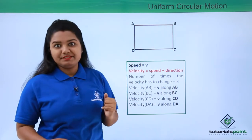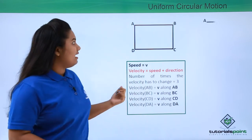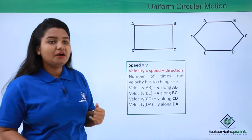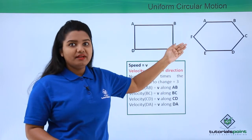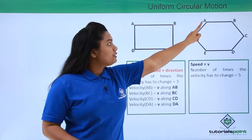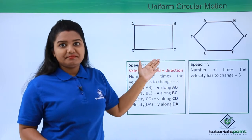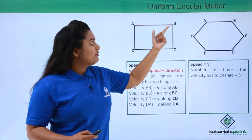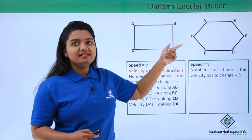Now let's say we increase the number of sides. We have a hexagonal path with six sides. Even here there is a change in velocity at certain points because of the change in direction of motion. At point B there has been a change in velocity since the body has taken a turn, and the same happens at points C, D, E, and F. So the number of times the velocity changed in this case is five times.